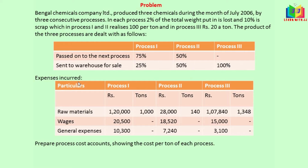Now looking at the expenses for all 3 processes — raw materials, wages, and general expenses are given for each process. Units are introduced into each process. We need to prepare the process account showing the cost per ton of each process — find the cost per ton.